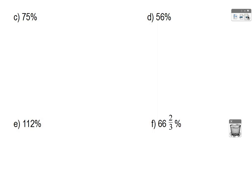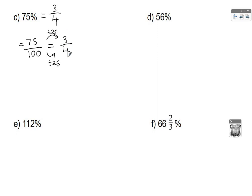For C, 75% — this is one we should remember from the table — so that is 3 quarters, which you can write straight away. Alternatively, you can go through the steps: 75% is 75 out of 100, then simplify. 25 goes into both 75 and 100, so divide both numerator and denominator by 25, giving you 3 quarters as 75% written in its simplest form.